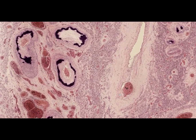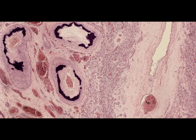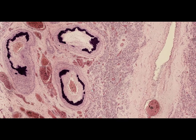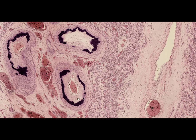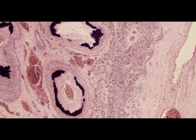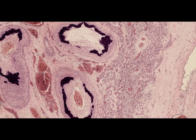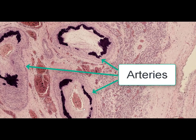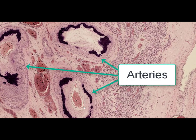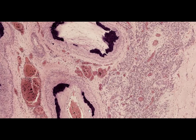At high magnification, within the wall of the uterine arteries, we can see a focus of calcinosis. It should be noted that calcium salt deposits are highly sensitive to alkaline stains, so they stain deep blue at standard staining with hematoxylin. If necessary, some special stains may also be used for calcium salts.